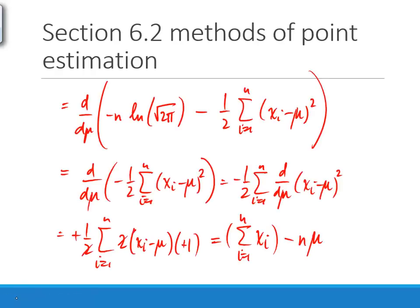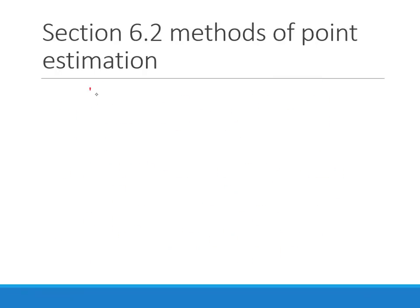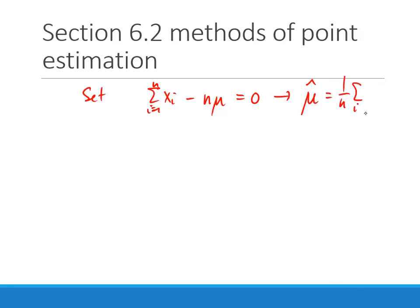Setting the derivative equal to zero: sum of xi's minus n times mu equals zero. This gives us that the possible estimate is one over n times the sum of xi's — which is the sample mean. Setting the derivative to zero doesn't guarantee a maximum, so I need to take the second derivative to verify.